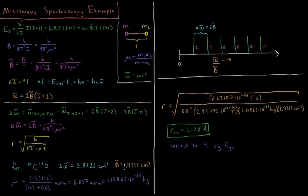This is actually an extremely accurate value — correct to four significant figures. Microwave spectroscopy was one of the great ways to infer structural information about molecules before we had tools like X-ray crystallography or NMR. It was a great way to determine bond lengths and gave extremely accurate values in the absence of other modern direct methods.